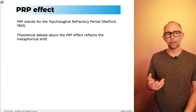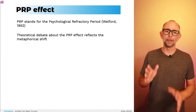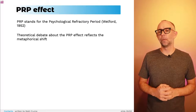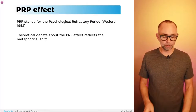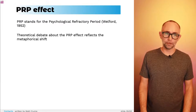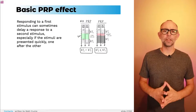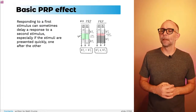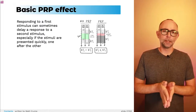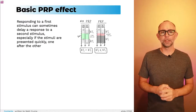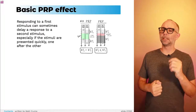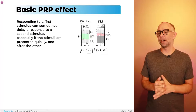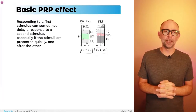The PRP effect really sets us up for the next part — a different video on information theory and information processing. What is the PRP effect? The PRP effect is the finding that responding to a first stimulus can sometimes delay a response to a second stimulus, especially if the stimuli are presented quickly one after the other.